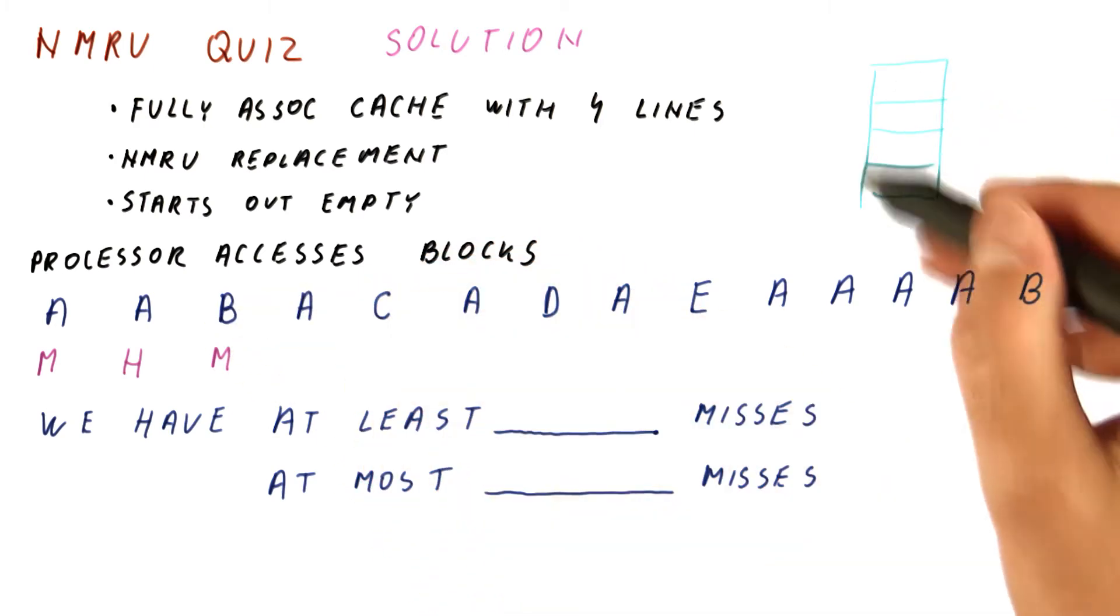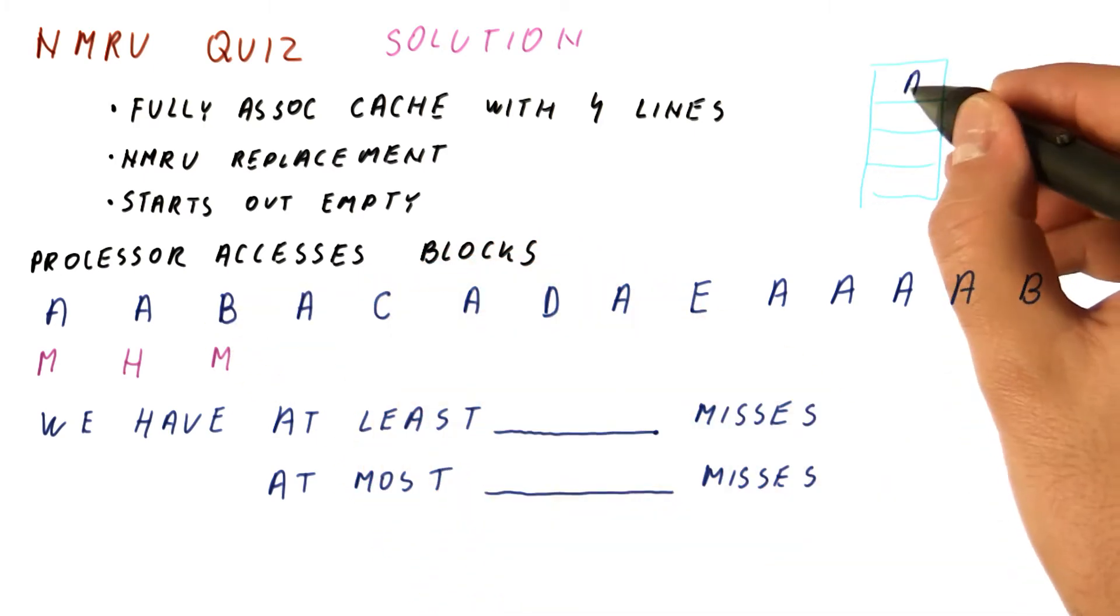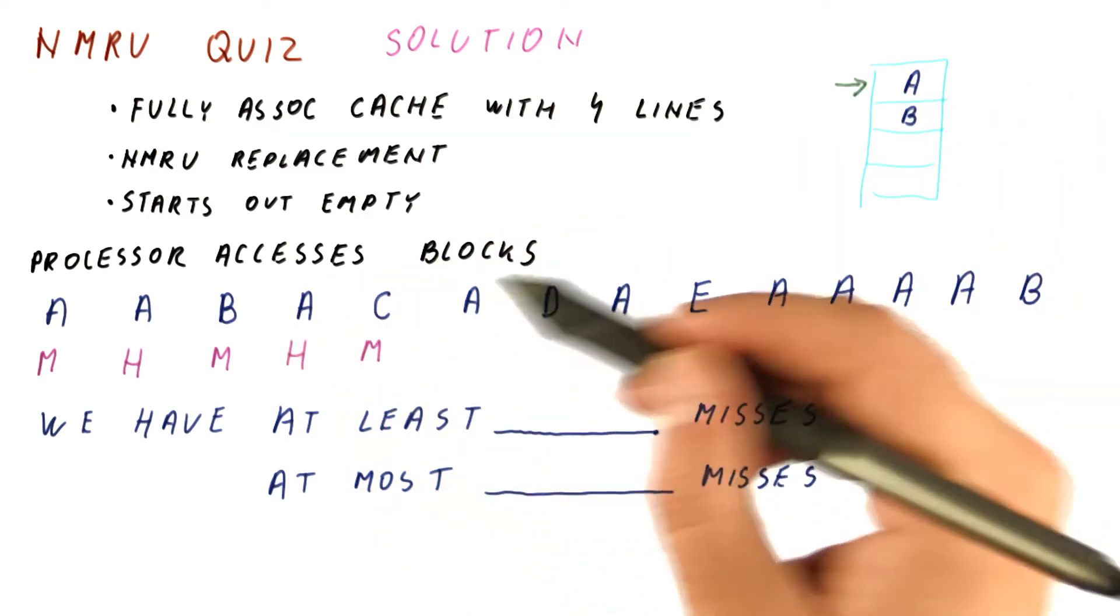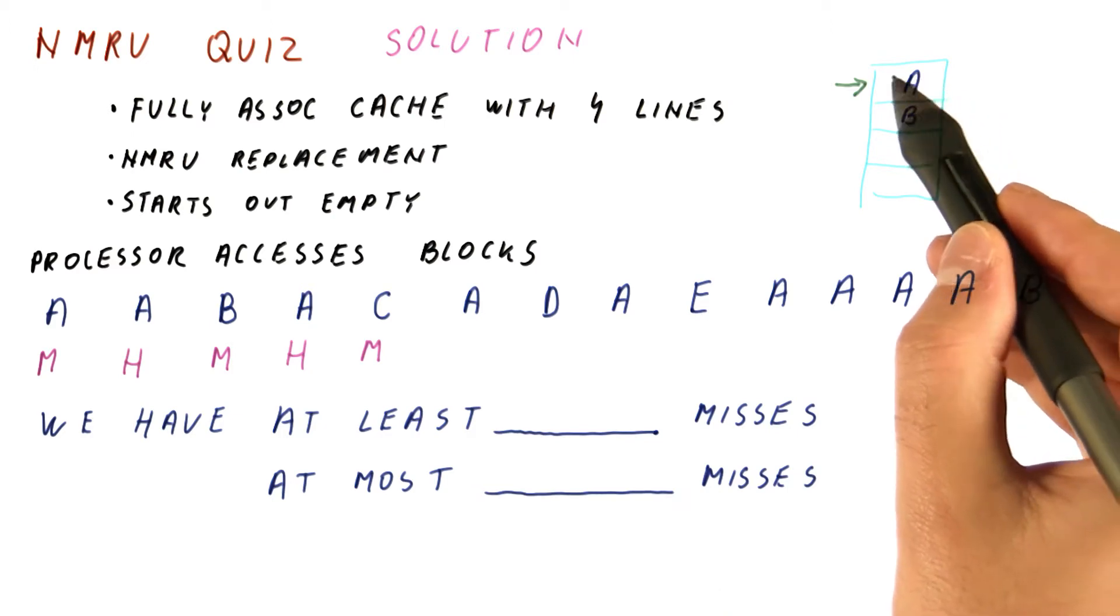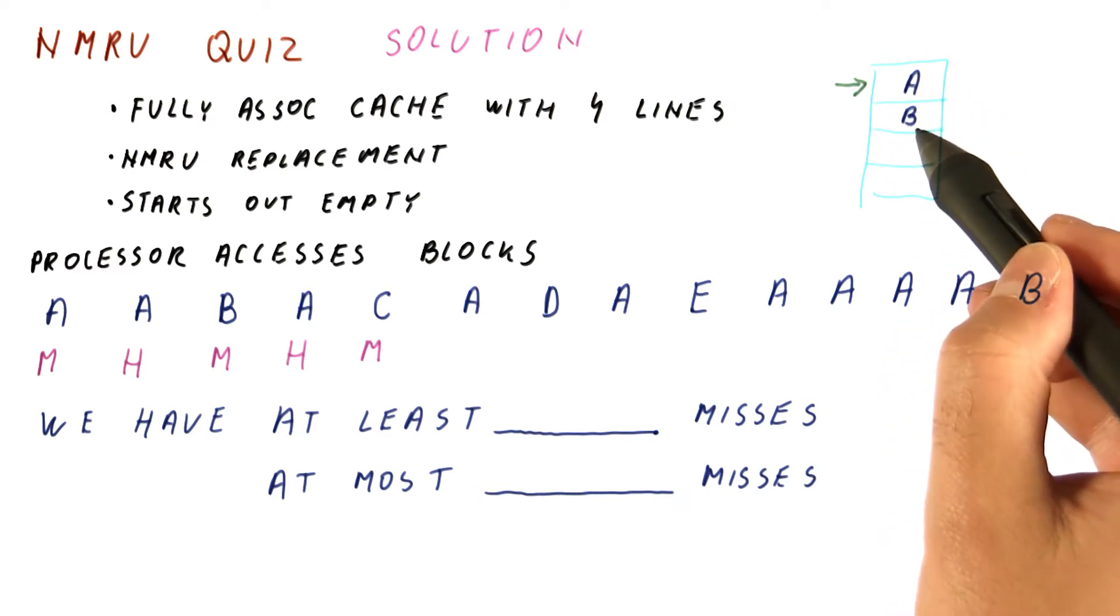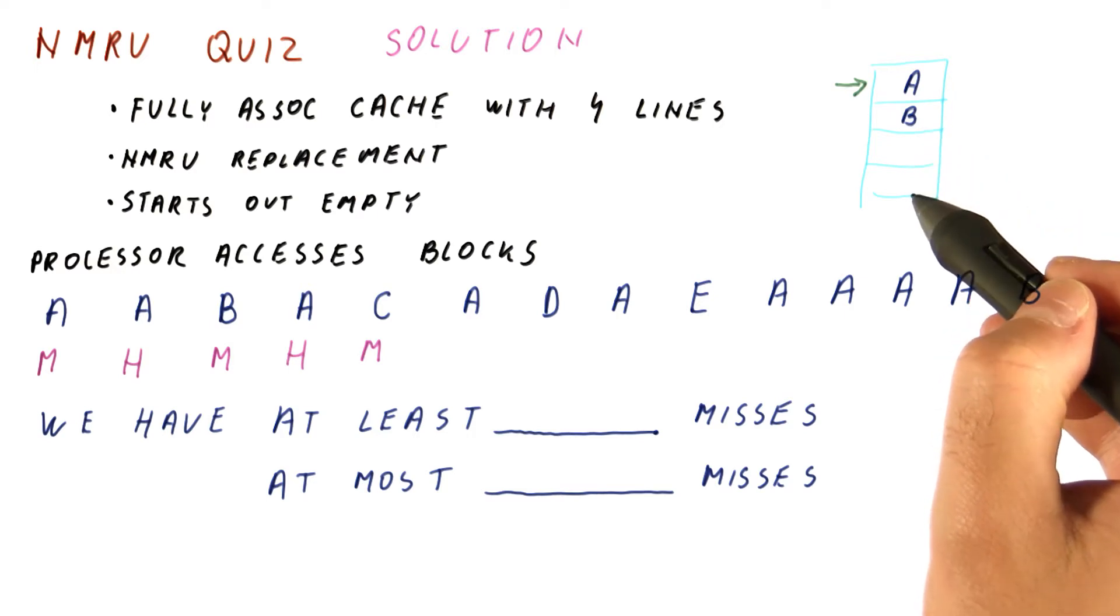If this is our cache, we have A and B there. Now we will access A and have a hit. So C is definitely a miss. And at that point, A is the most recently used block. And we will find one of these three to evict, to put C there.